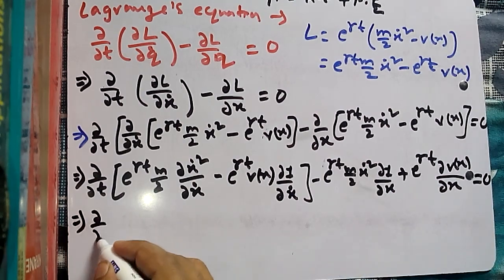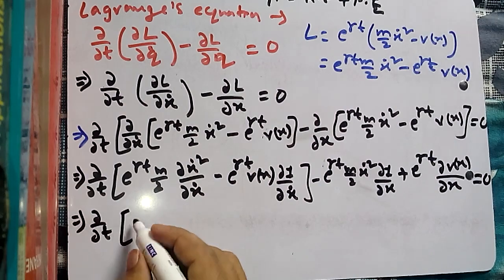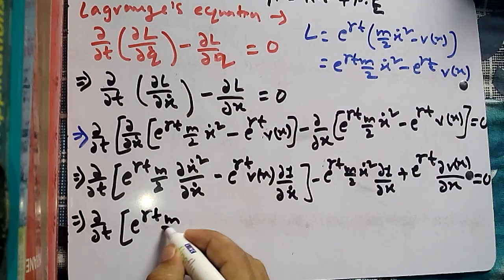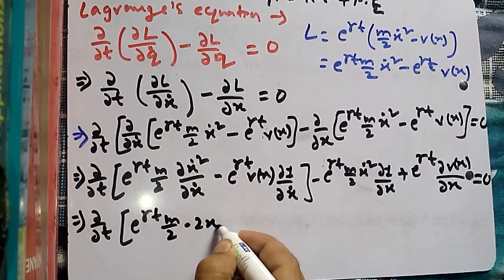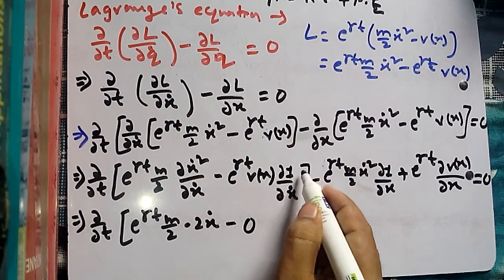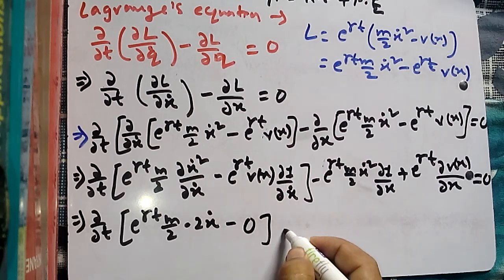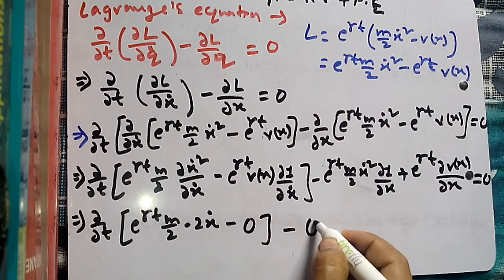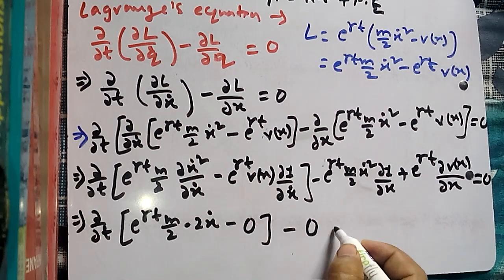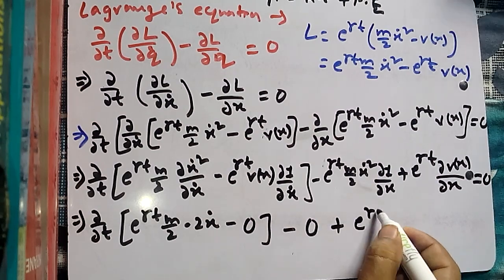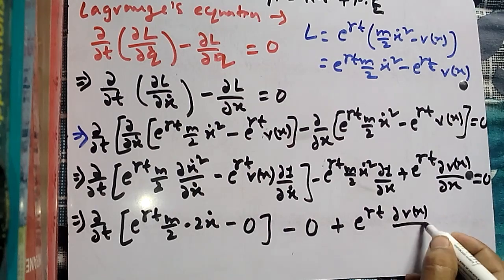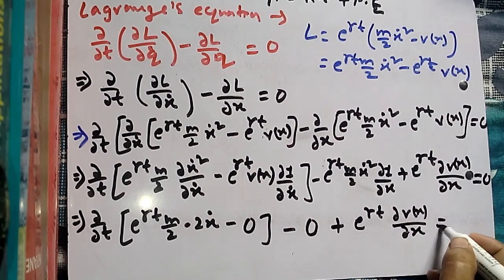Then we have d/dt of [e^(gamma t) times m/2 times 2x-dot], where the derivative of the constant terms with respect to x-dot gave us 2x-dot, minus zero. The second term contributed zero since it was constant with respect to x-dot. Plus e^(gamma t) times ∂V(x)/∂x equals zero.